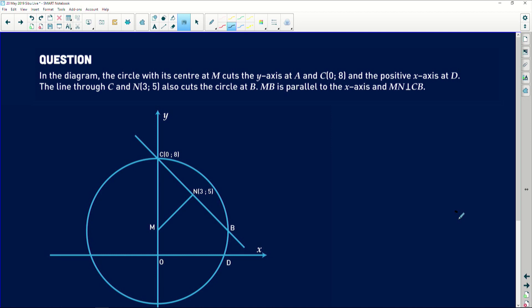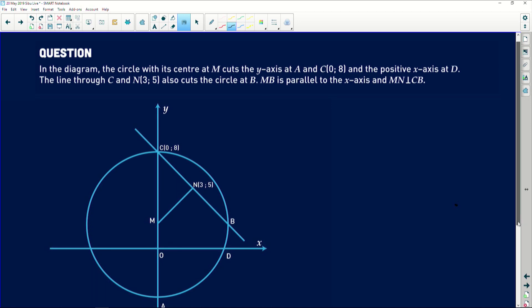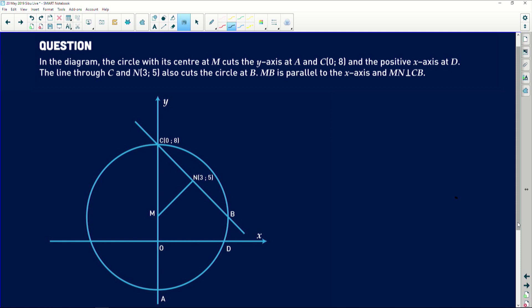In this diagram, the circle with center M cuts the y-axis at point A. If you go further down you'll see point A right there at the bottom. And point C with given coordinates (0, 8), and the positive x-axis at D. Also passes at point D. The line through C and N also cuts at B.